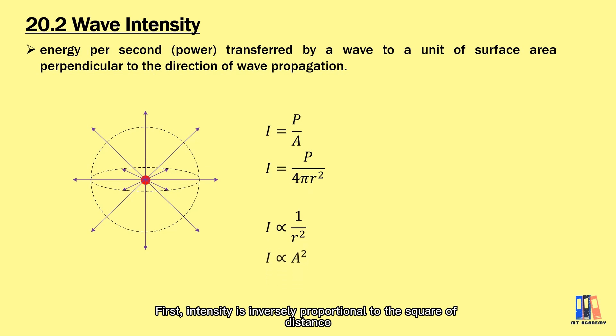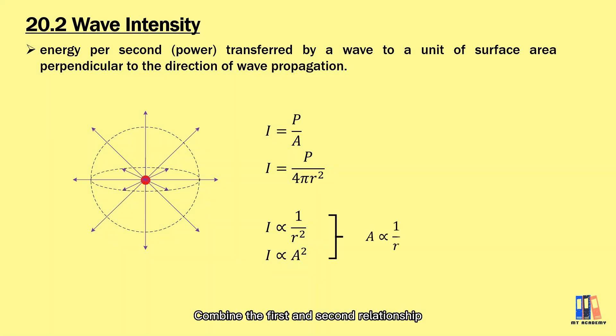First, intensity is inversely proportional to the square of distance. Second, it is also directly proportional to the square of amplitude. And you just need to remember about this relationship which is provided from the learning outcome. So combining the first and second relationship, we can see that amplitude of the wave is inversely proportional to the distance.